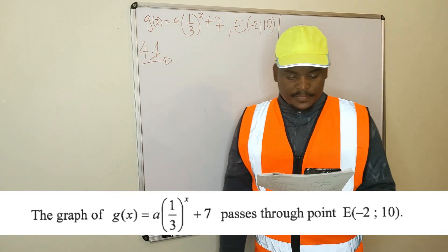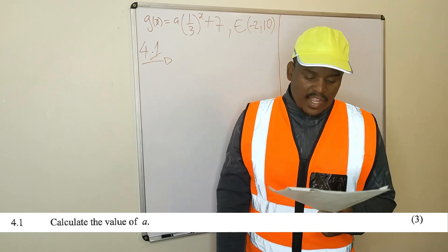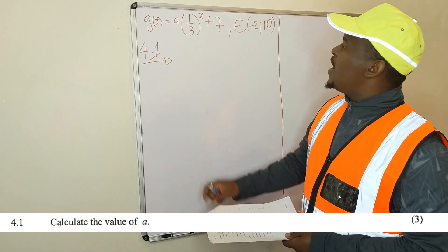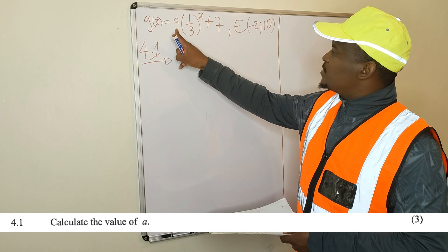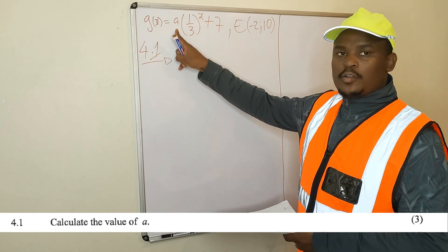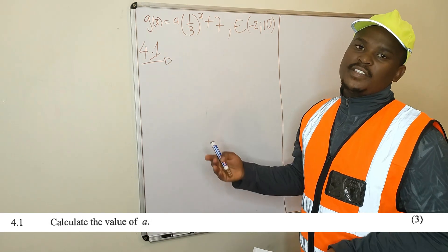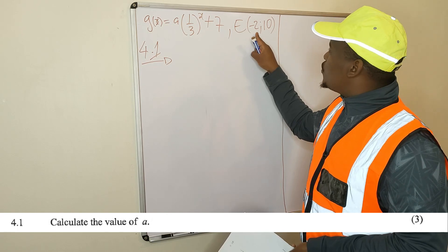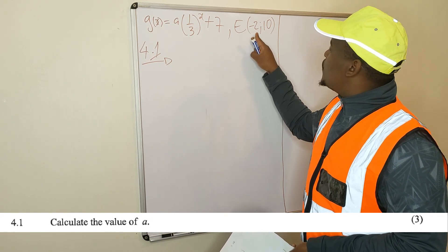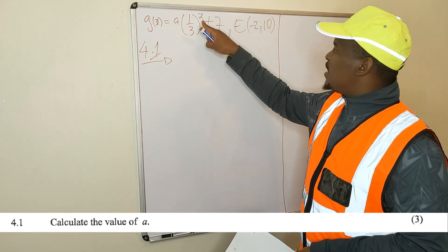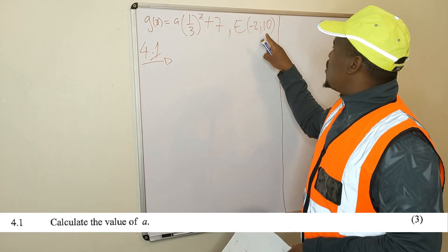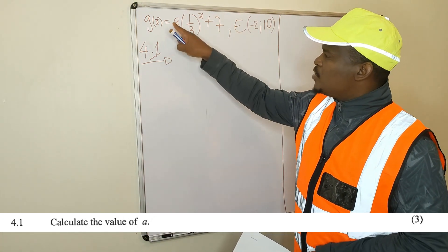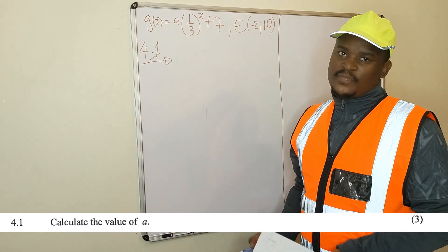Let's go to 4.1: calculate the value of a. They want you to find the value of a. How do you find the value of a? You use the information that you are given. You are given point E, which has x-coordinate -2, which you substitute in, and y-coordinate 10, which you substitute in. Then you solve for a.